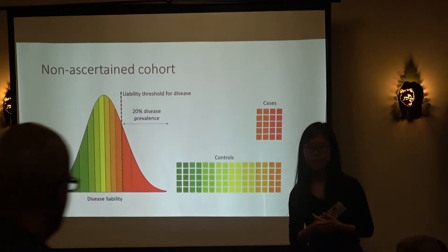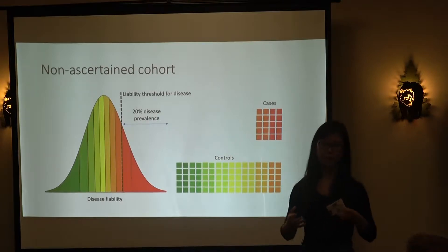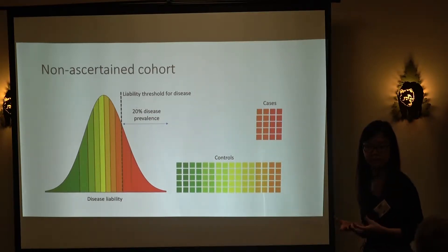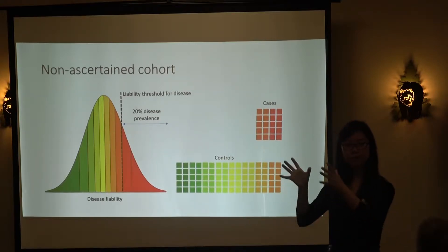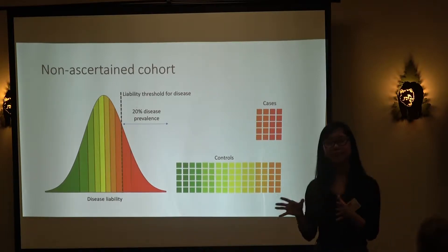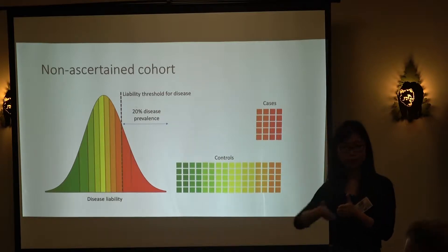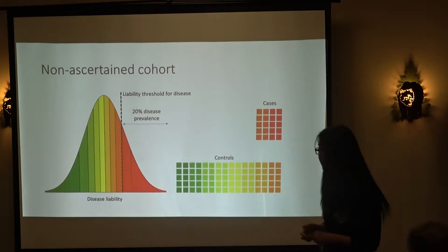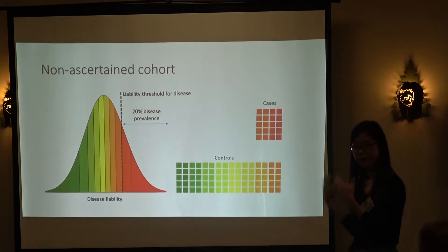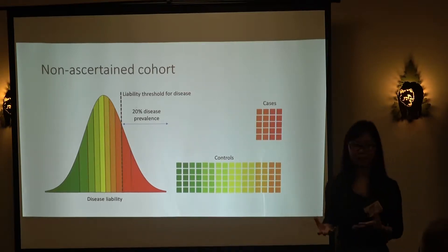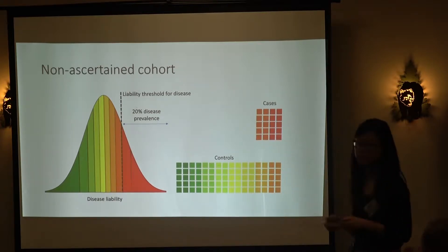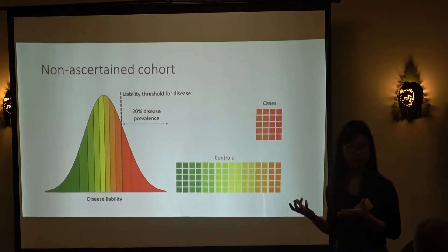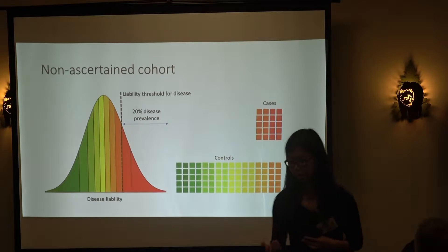More recently, we have large biobanks and electronic health records that document disease rates for everyone in the database. You can define disease prevalence using the data itself by applying criteria to identify cases and controls. If those criteria don't give you the same disease prevalence as previous studies, there is reason to suspect the phenotype you're assaying is not the same phenotype you think you're studying. That is the problem we'll be discussing today.